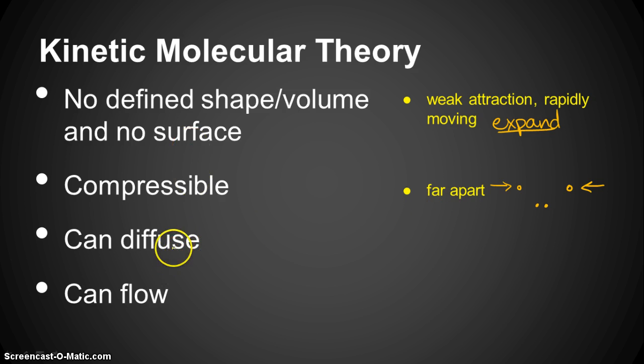How can kinetic molecular theory explain diffusion? Well, particles can move from an area of high concentration to an area of low concentration if they are constantly moving and if that motion is random. If it's random, some of them will move into the lower concentrated area and some will be moving back into the higher concentrated area. But as time goes by, they will all become equally distributed.